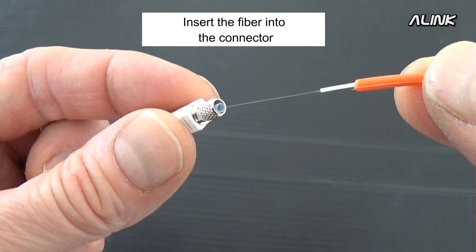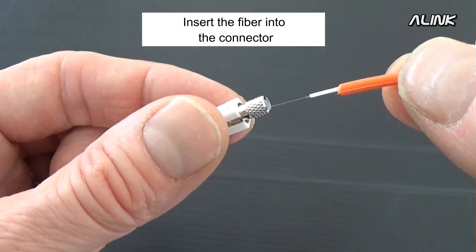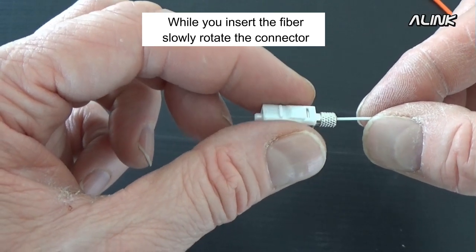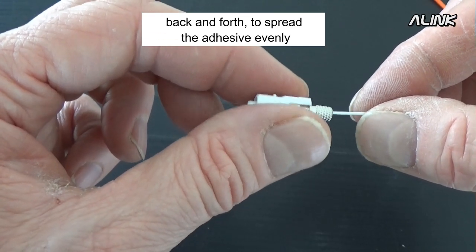Insert the fiber into the connector. While you insert the fiber, slowly rotate the connector back and forth to spread the adhesive evenly.